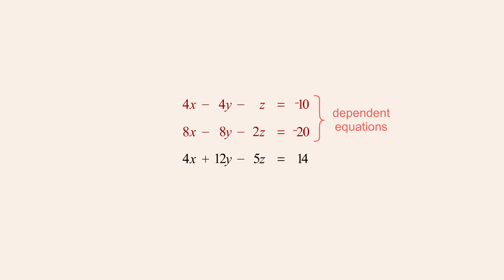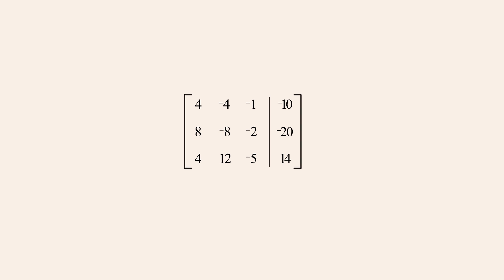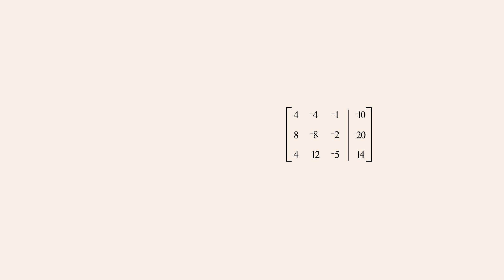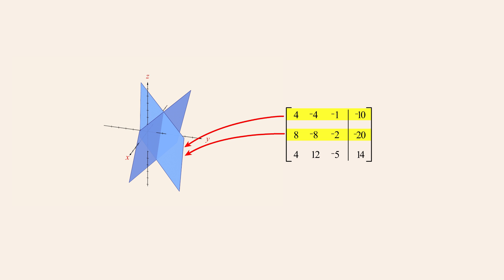Now, let's represent this system of equations as a matrix. Graphically, each matrix row corresponds to a plane. Rows one and two describe identical planes and row three describes a plane which is distinct from the other two.